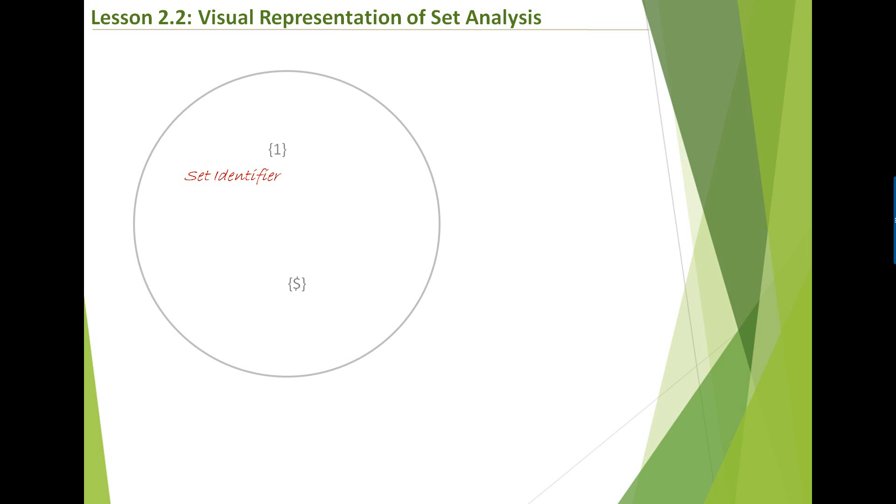And one implies full set. Dollar sign is the current selections, and then one implies full set. And then we have dollar one, which is your previous selection.